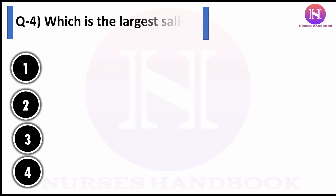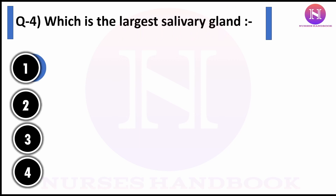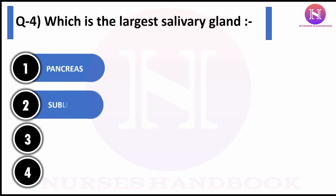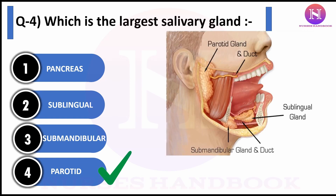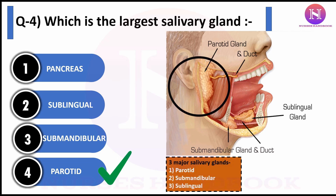Question number four: which is the largest salivary gland? Option one: pancreas, option two: sublingual, option three: submandibular, option four: parotid. The correct answer is parotid. We have three major salivary glands: the parotid, submandibular, and sublingual salivary glands.